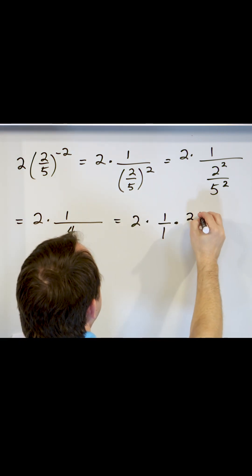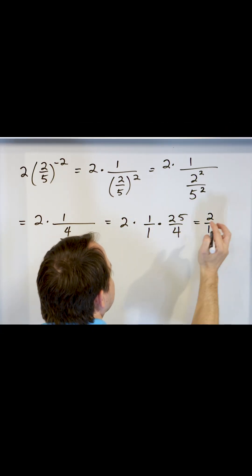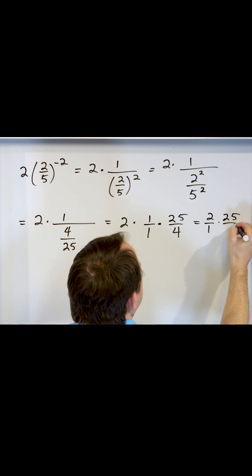One over one, and multiply 25 over 4. So what you really have is 2 over 1 times 25 over 4.